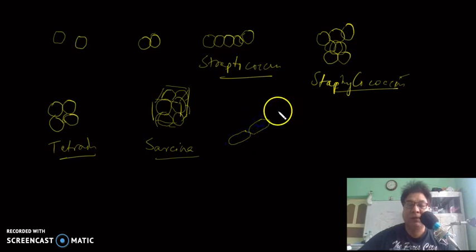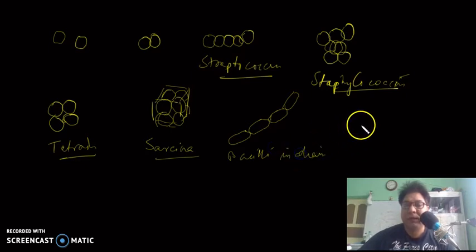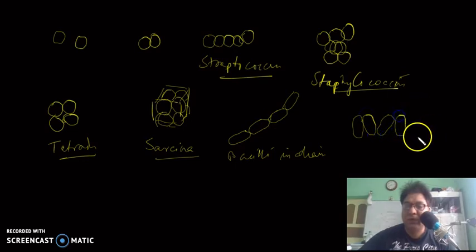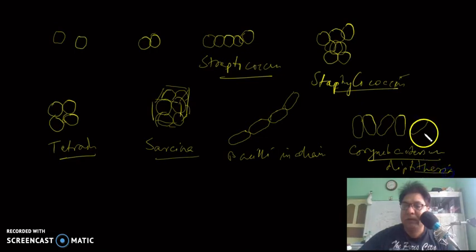There are also different types of arrangements of bacilli. They sometimes remain independent or divide transversely and stay in chains. Sometimes bacilli divide longitudinally and remain in a formation resembling matchsticks or a Chinese letter arrangement. This is a characteristic of Corynebacterium diphtheriae, the pathogen of diphtheria.